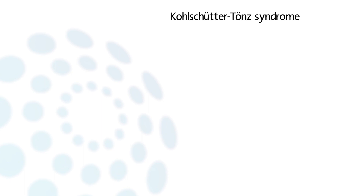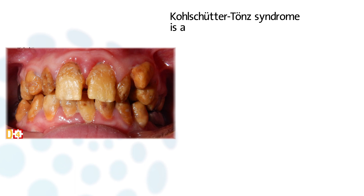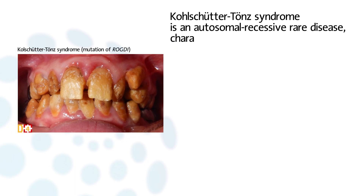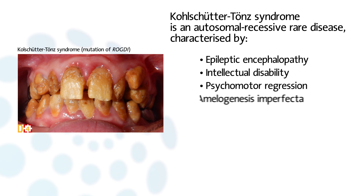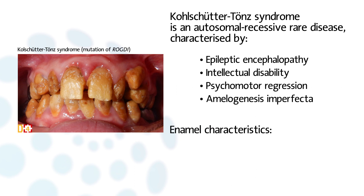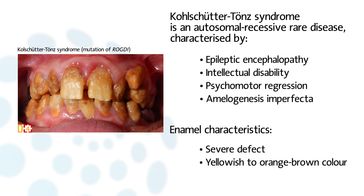Another example of syndromic AI is the Kohlschütter-Tönz syndrome. This is an autosomal recessive rare disease characterized by epileptic encephalopathy, intellectual disability, psychomotor regression, and Amelogenesis Imperfecta. The enamel defect is severe with yellowish to orange-brown discoloration of both primary and permanent teeth.